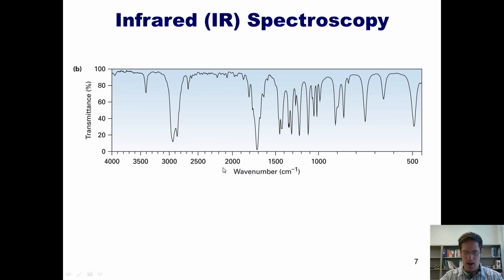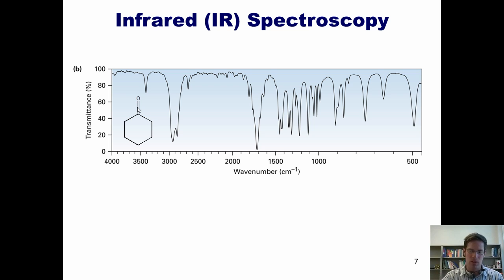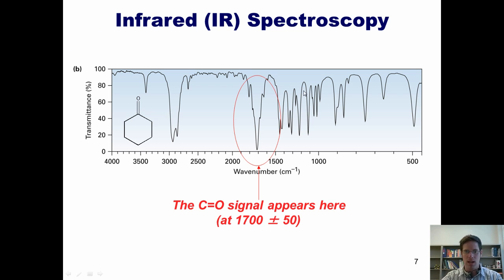Here is the IR spectrum for cyclohexanone, which has a carbon-oxygen double bond, or carbonyl. It absolutely contains a carbonyl functional group. Where does that carbonyl show up? Right here around 1700 plus or minus 50 — and it's huge. Once again, these peaks correspond to the CH bonds in the molecule.